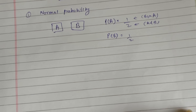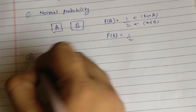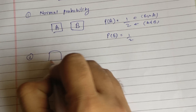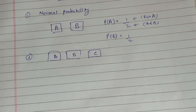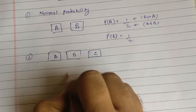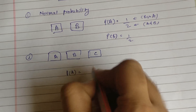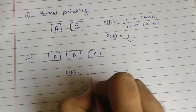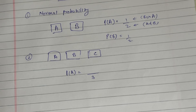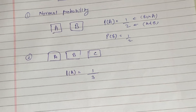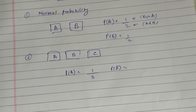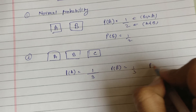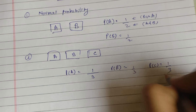Now consider the next case: if there are three boxes A, B, C, what is the probability of selecting box A? Total number of boxes is 3, so the denominator is 3, and there is only one box A, so P(A) = 1/3. Similarly, P(B) = 1/3 and P(C) = 1/3.